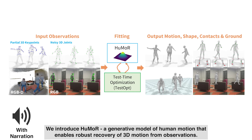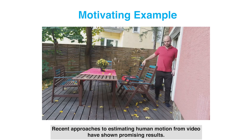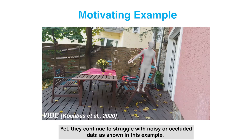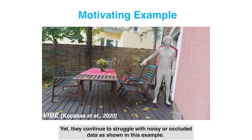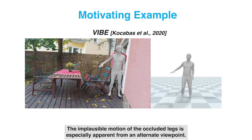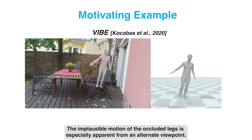We introduce HUMOR, a generative model of human motion that enables robust recovery of 3D motion from observations. Recent approaches to estimating human motion from video have shown promising results, yet they continue to struggle with noisy or occluded data as shown in this example. The implausible motion of the occluded legs is especially apparent from an alternate viewpoint.